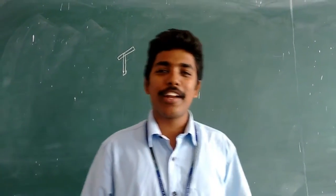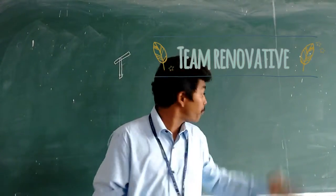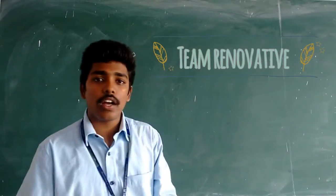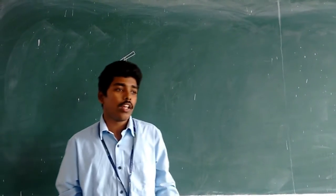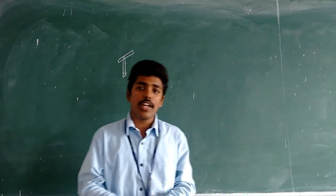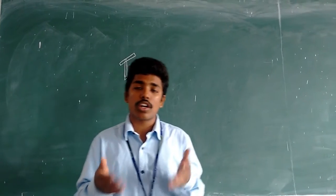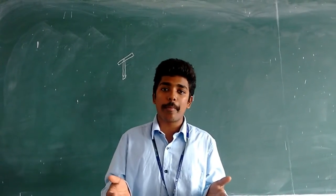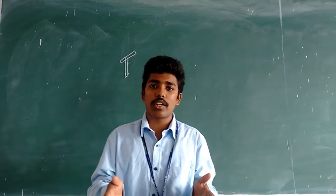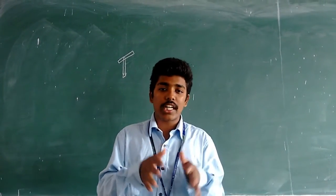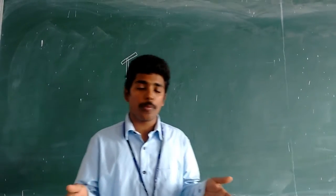We are from team Renovative. Our problem definition: a major part of Earth is covered with water, yet we are having scarcity of water. What is the problem behind it? We are throwing all waste into the water, so it is contaminated and cannot be used for human use.